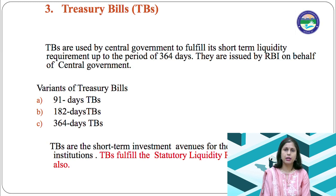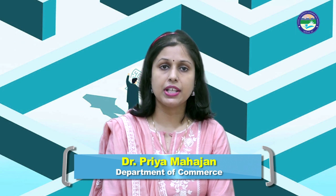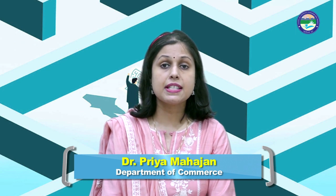Treasury bills are used by the central government to fulfill its short-term liquidity requirements up to a period of 364 days. They are issued by the RBI on behalf of the central government. The variants of treasury bills are 91-day, 182-day, and 364-day treasury bills. These are short-term investment avenues for banks and financial institutions, and also fulfill the Statutory Liquidity Ratio (SLR) requirement of these financial institutions.